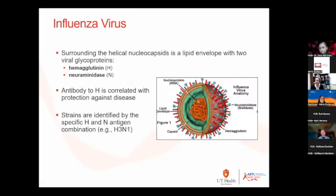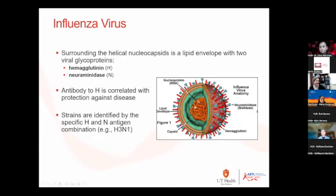This is not a picture of COVID — I know it looks like COVID, but it's not. This is what influenza looks like, and it looks a lot like COVID. The influenza equivalent of the spike protein on COVID are neuraminidase and hemagglutinin, which stick off of the surface of the influenza virus. You get an antibody to hemagglutinin and that protects you against disease, and strains are identified by both of these things.